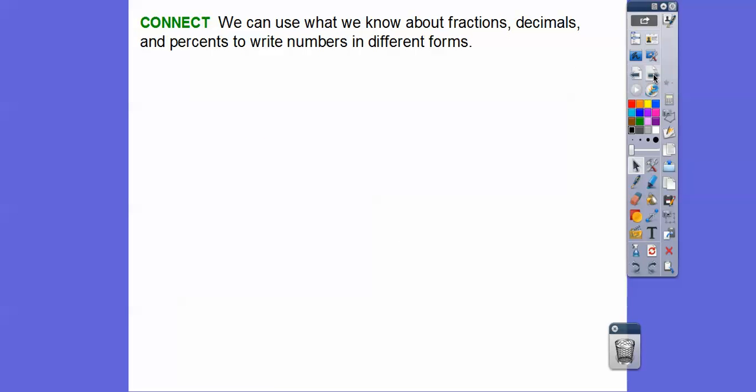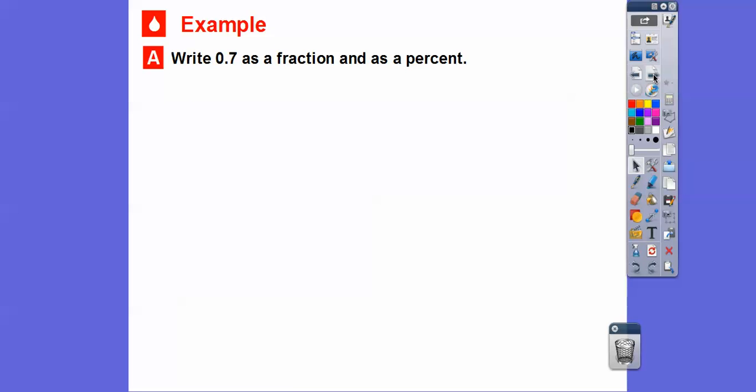We can use what we know about fractions, decimals, and percents to write numbers in different forms. For example, let's write 0.7 as a fraction and as a percent. So 0.7 means, remember decimal place value, this ends in the tenths position, so 0.7 means 7 tenths. To write it as a fraction, it's just 7 over 10. So 0.7 is 7 tenths, and in words, it's 7 tenths because it ends in the tenths spot.